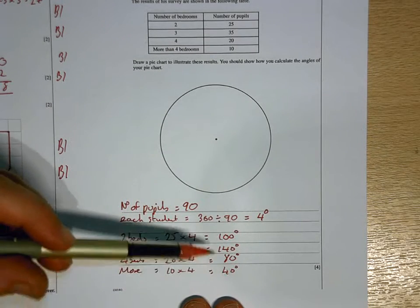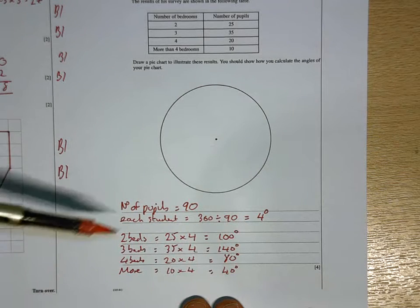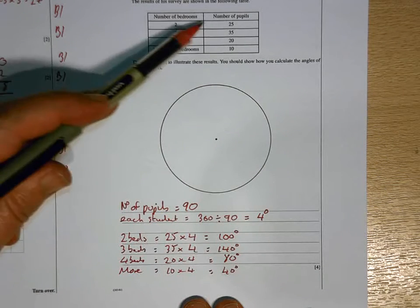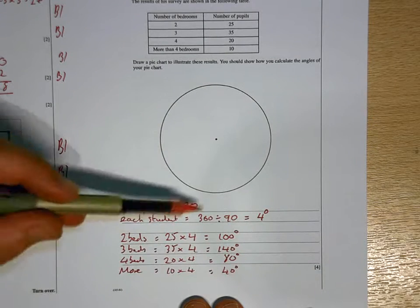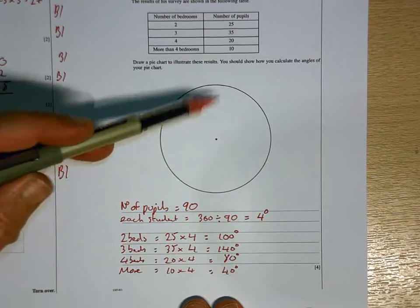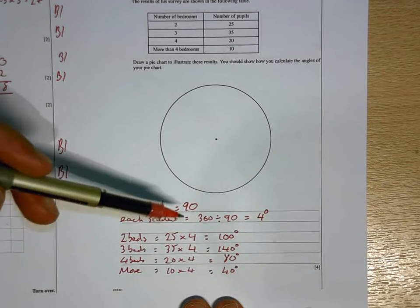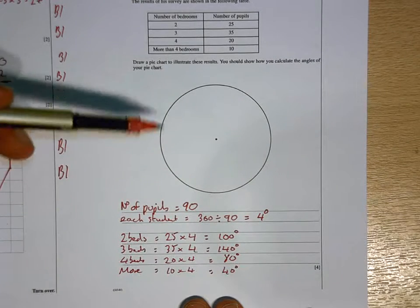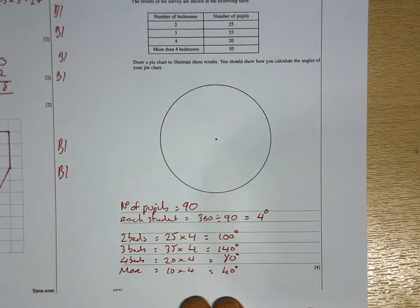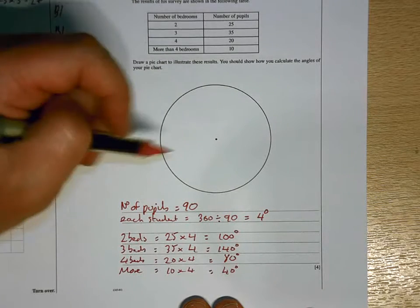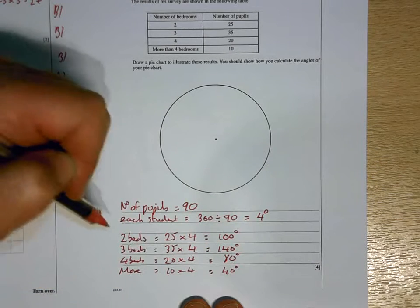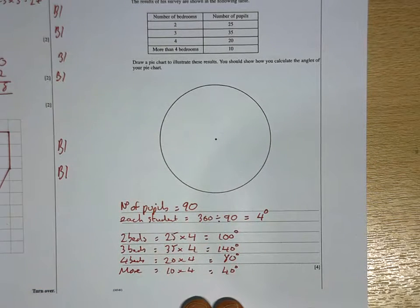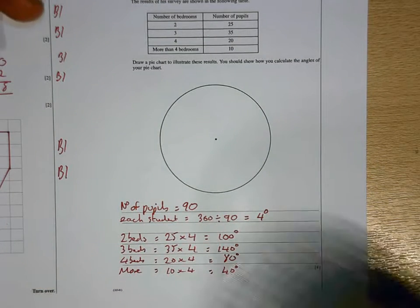So out of those four marks, three of them are for doing that. Working out the number of students, adding them up, you get 90. How much is each student going to get a slice of the pie? 360 degrees is a whole pie. Divided by 90 is 4 degrees. And then, because 25 students are in that one, that's 25 lots of 4, which is 100, and so on. So then we need to draw it.